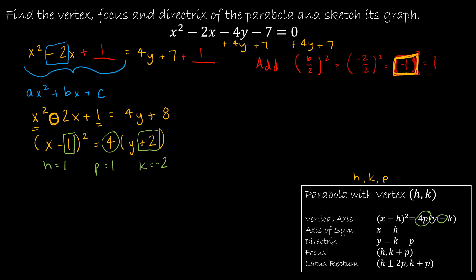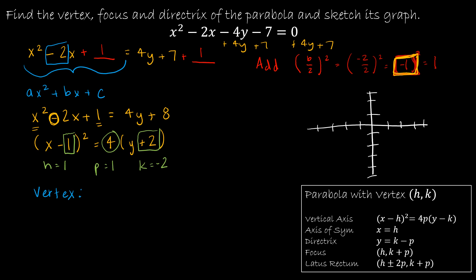Using those values, we're going to find everything we need. Starting with the vertex, which is (h, k) = (1, −2). Next, the axis of symmetry is x = h, so x = 1. That's the equation of a line at x = 1, and typically the axis of symmetry is drawn as a dotted line.